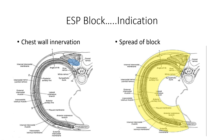Comparing the spread of the ESP block to the serratus anterior plane block: the SAP block covers only half of the anterior, posterior, and axillary level, whereas the erector spinae plane block can confidently block at least two levels from the injection point — hemithorax meaning half of the chest wall.